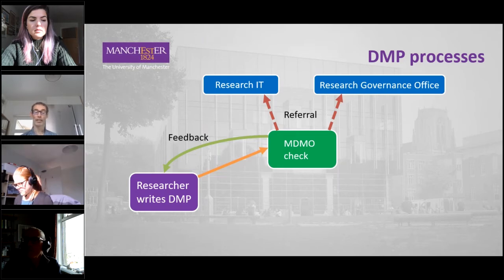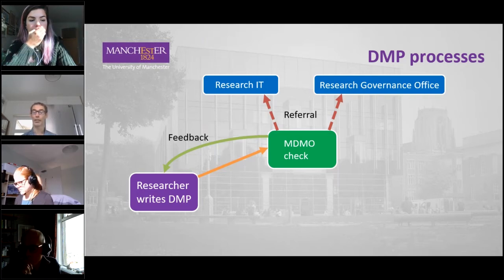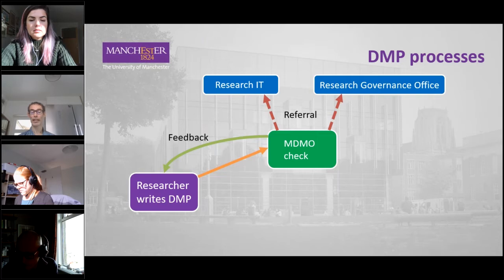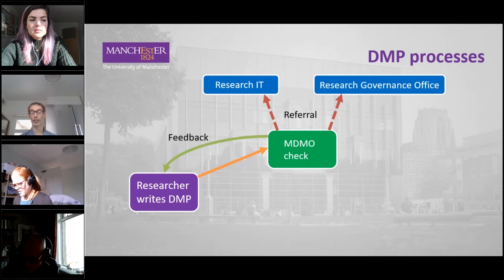Once a researcher has created their plan, the journey of a DMP begins with an initial check of the outline section by the library's RDMT. A feedback email is then sent to the researcher with basic advice based on the answers they've given. This might cover information on our service provision, storage options, data retention, managing risk, and advice on handling sensitive data, if relevant.